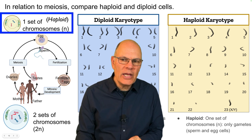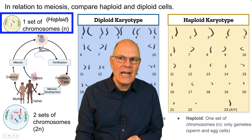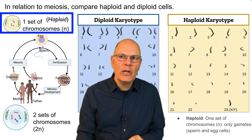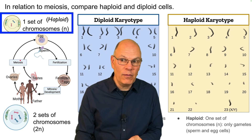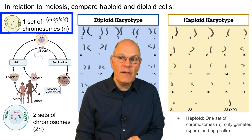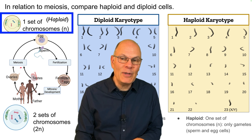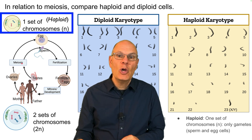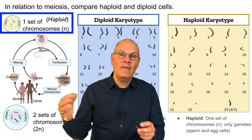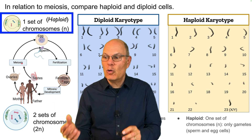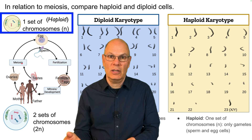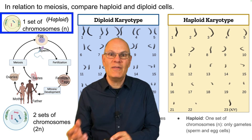Notice that there are four chromosomes in the original cell, but only two in the resulting cells. The difference is what happened during meiosis, which is division of cells that involves reduction — reduction division.